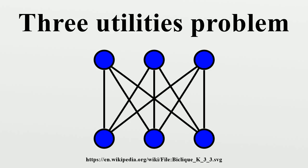The utility graph K3-3 is, like all other complete bipartite graphs, a well-covered graph, meaning that every maximal independent set has the same size. In this graph the only two maximal independent sets are the two sides of the bipartition, and they are equal in size. K3-3 is one of only seven three-regular, three-connected, well-covered graphs. It is also a Lehmann graph, meaning that it forms a minimally rigid system when embedded in the plane. It is the smallest example of a non-planar Lehmann graph, as the other minimal non-planar graph K5 is not minimally rigid.